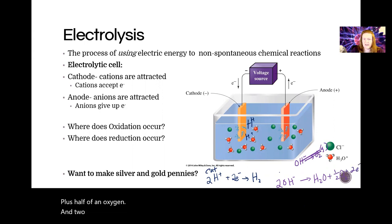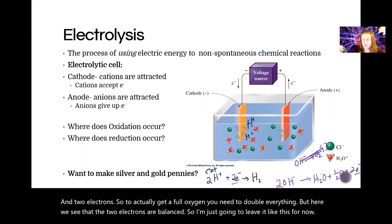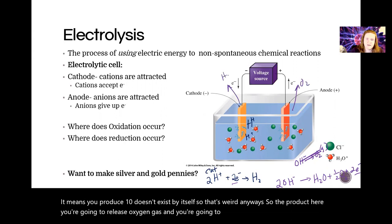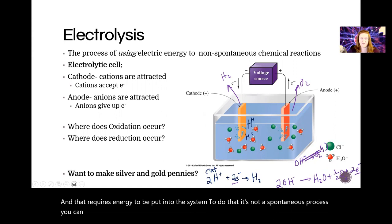So to actually get a full oxygen you need to double everything, but here we see that the two electrons are balanced. So I'm just going to leave it like this for now. It means you produce one O, but O doesn't exist by itself, so that's weird. Anyways, so the products here, you're going to release oxygen gas and you're going to release hydrogen gas and that requires energy to be put into the system to do that. It's not a spontaneous process. You're going to have a delta G that's positive.